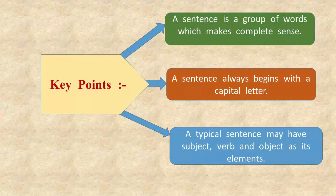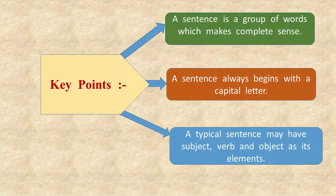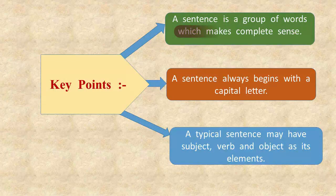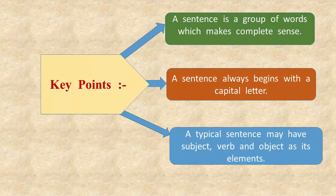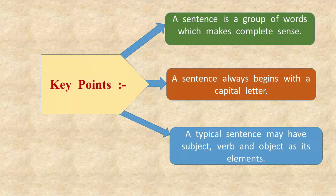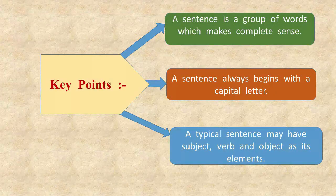Please repeat after me the following key points. A sentence is a group of words which makes complete sense. A sentence always begins with a capital letter. A typical sentence may have subject, verb, and object as its elements.